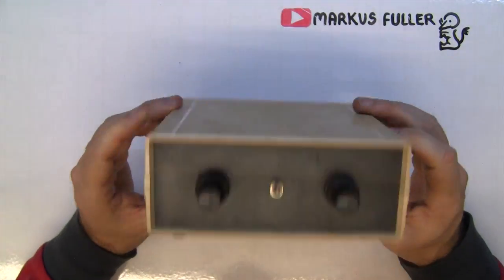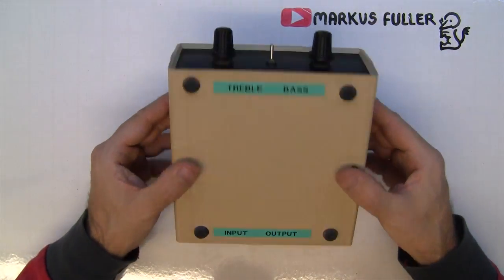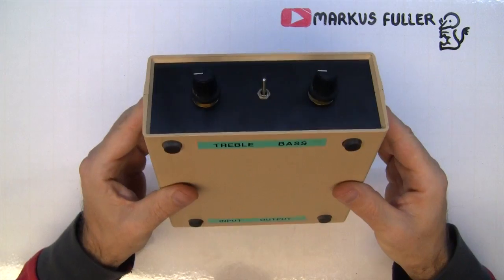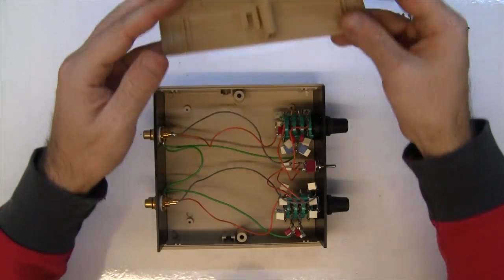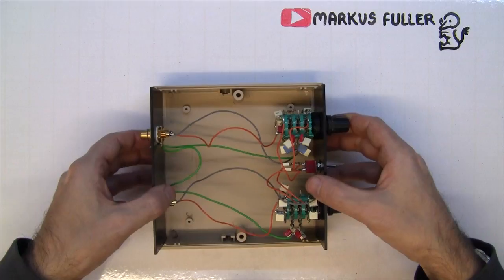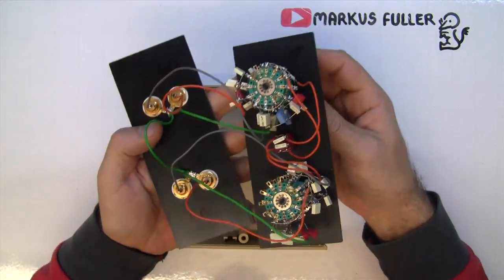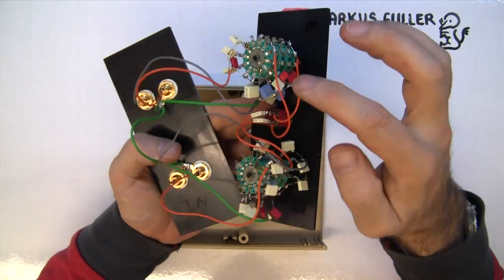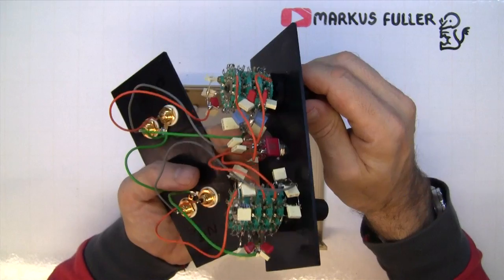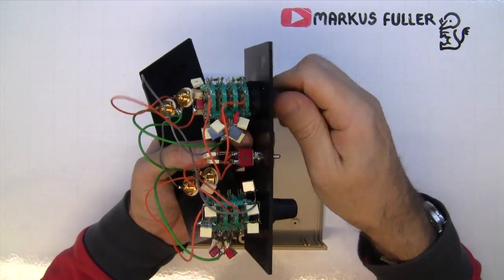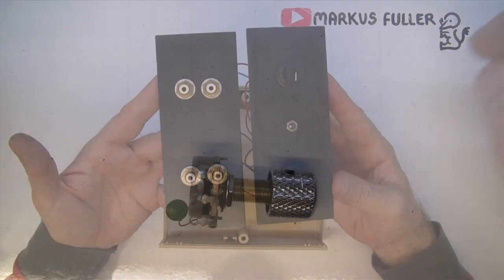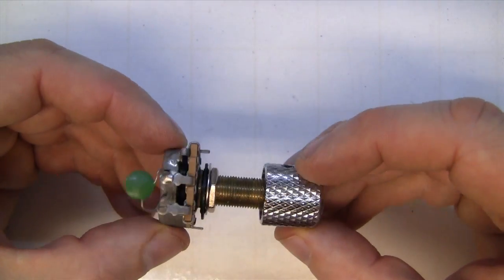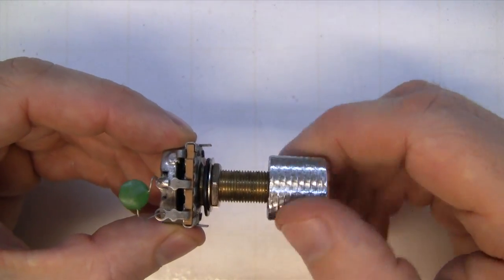This is a simple but effective treble and bass control. Put the input and output there, and then what we have is a couple of switches that switch in different banks of capacitors, different values of capacitors. And that controls the bass and treble. This is what you find in electric guitars.